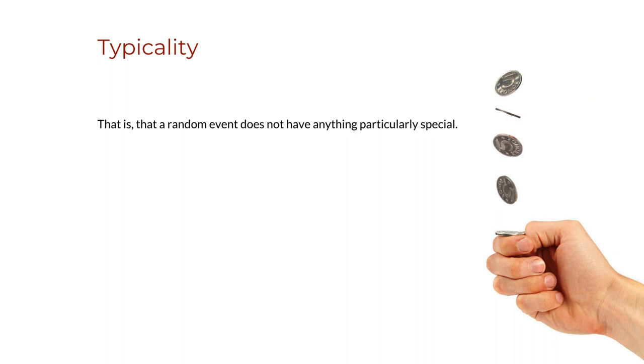Incompressibility, i.e., that one cannot describe something random in a simple or short fashion. And Typicality, i.e., that a random event does not have anything particularly special. A sequence of coin tosses, for example, would be called typical if it looks unbiased, i.e., random. But if it comes out with only tails every time then it would look atypical, compressible and highly predictable.